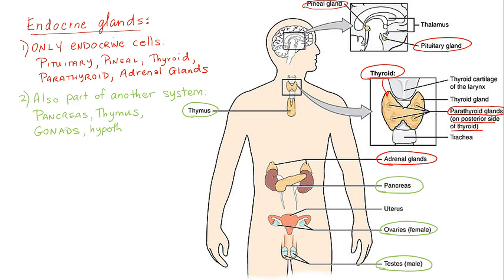And then there's the hypothalamus in the brain, which is part of the nervous system, but sends hormones in response to nerve impulses. So let's just write hypothalamus in here at the top of the slide in the brain.